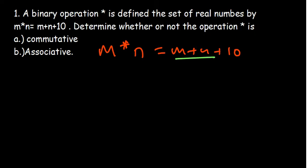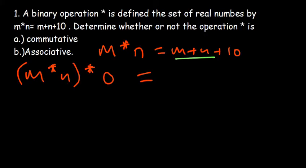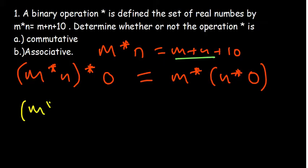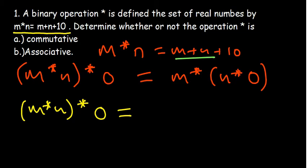Now we go to the associative part. Associativity deals with three elements. We need to check: is (m★n)★o equal to m★(n★o)? Starting with the left-hand side, we have m★n in brackets, and we perform an operation with o. The binary operation works on two things, so we take what is in the brackets and operate with o.